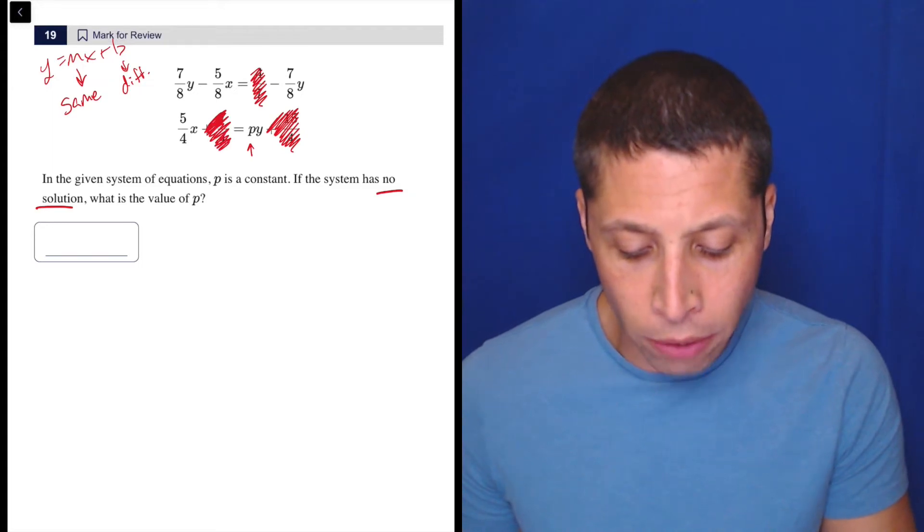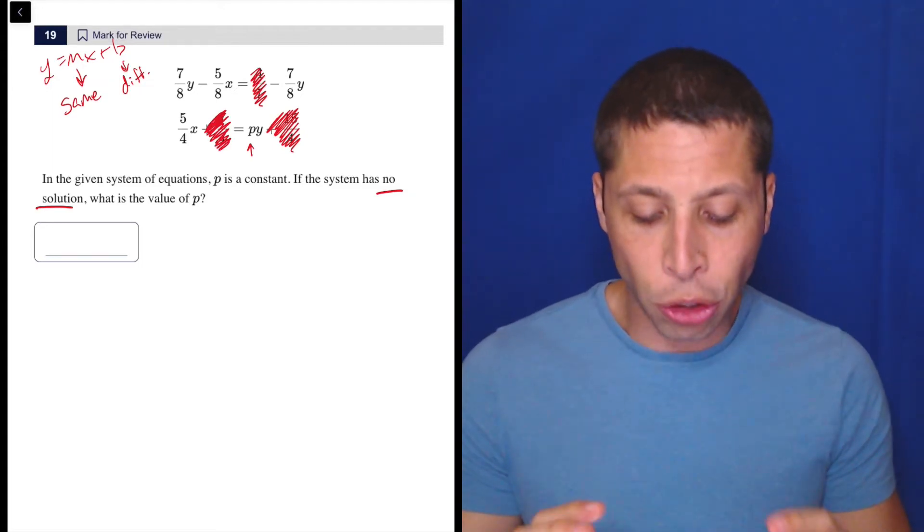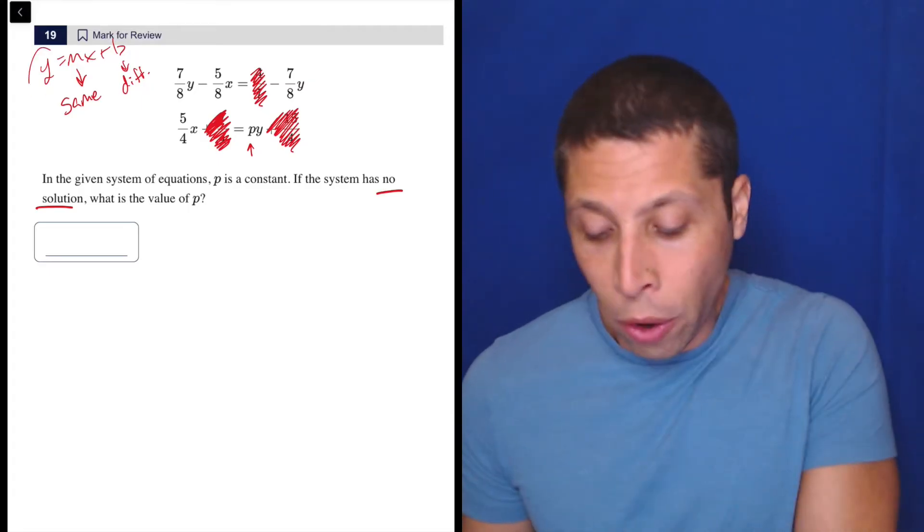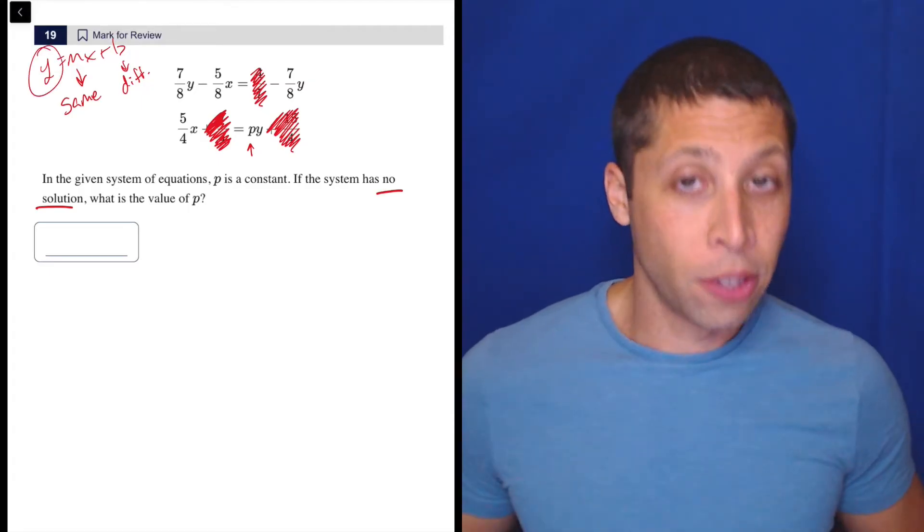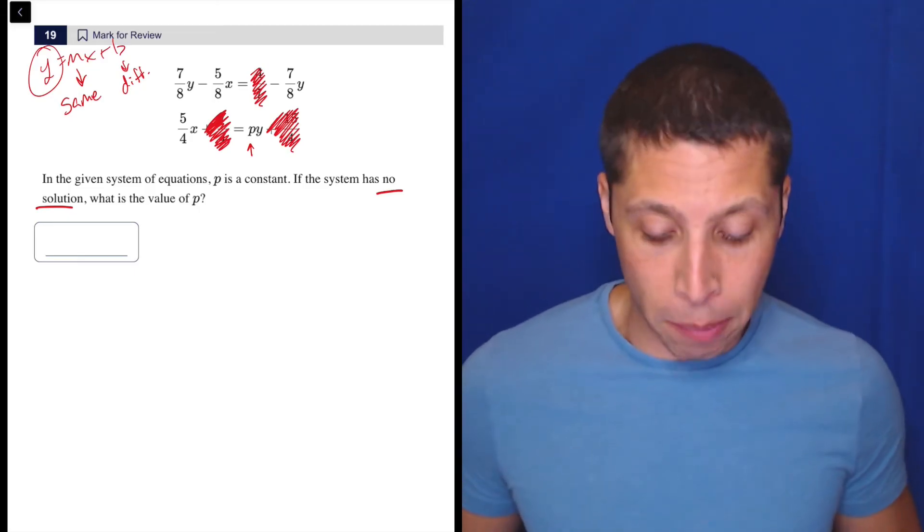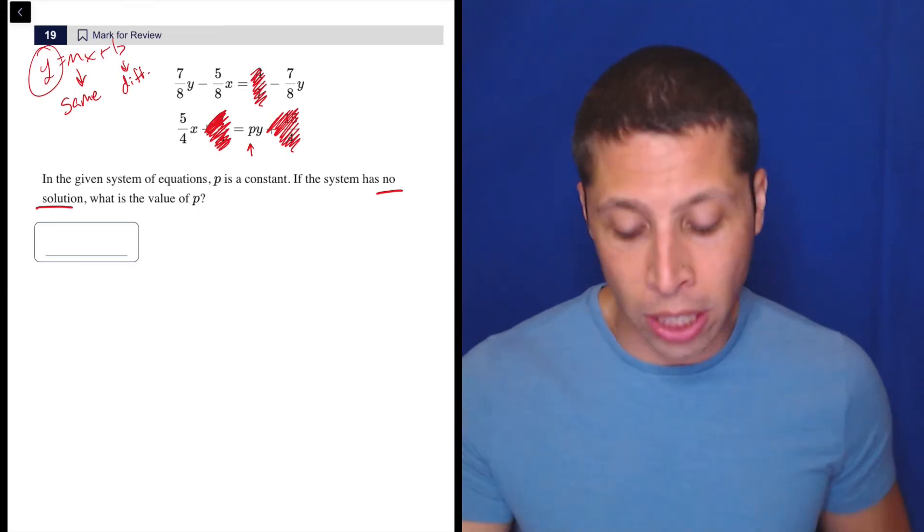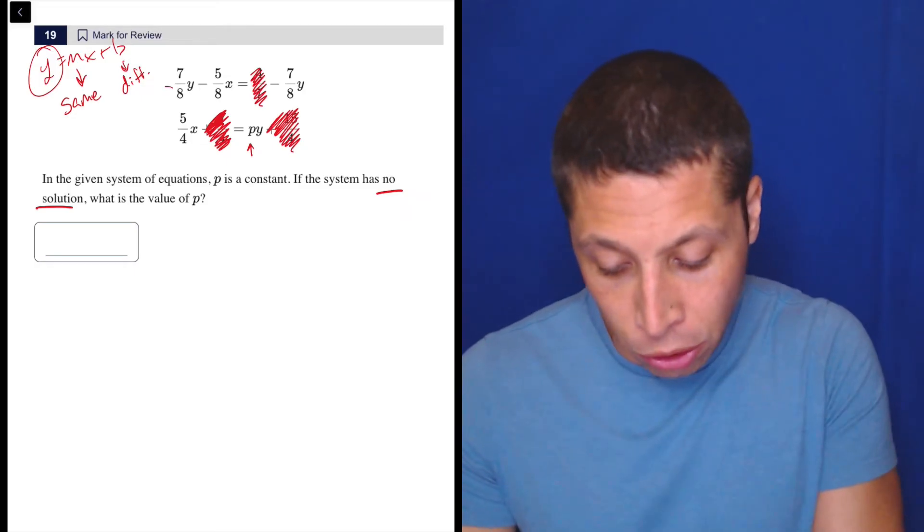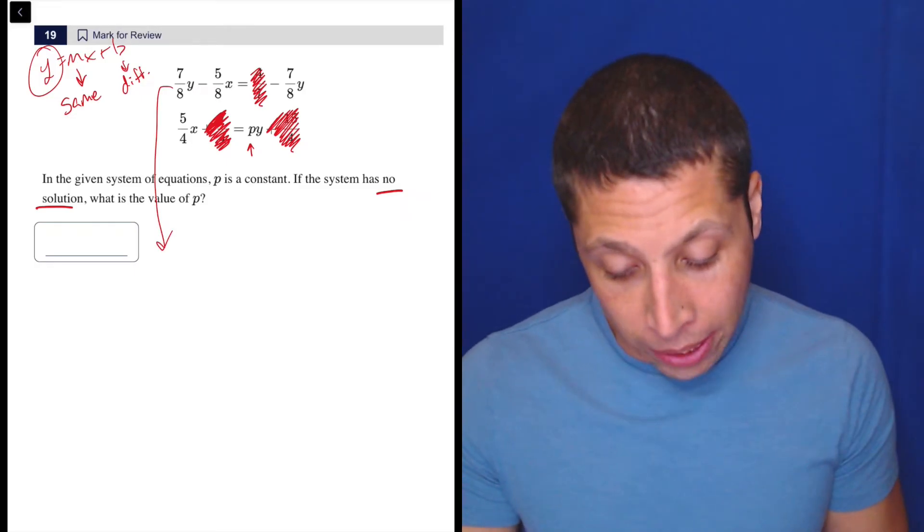Really all we're looking for is to make sure that these x and y terms are in a format where the y is alone. So that is basically y equals mx plus b, but ignoring the b, because we're really interested in that m. Those slopes need to be the same. So let's start manipulating things, let's take this first equation and start manipulating it.